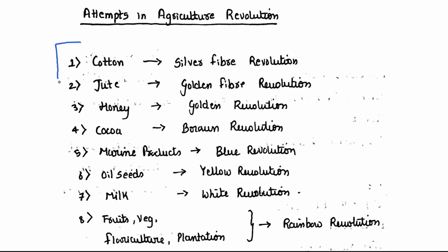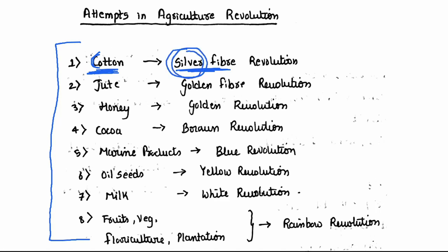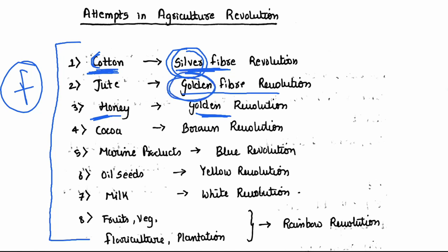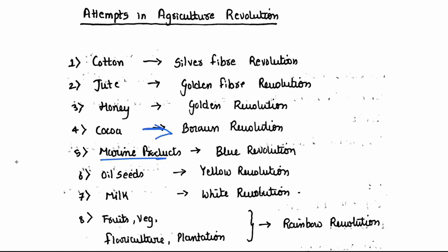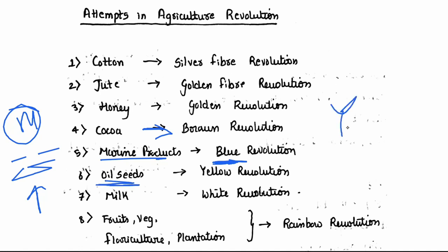Here are important agricultural revolutions: Cotton — Silver Fiber Revolution (cotton is white, silver is almost white). Jute — Golden Fiber Revolution. Honey — Golden Revolution. Cocoa — Brown Revolution. Marine products — Blue Revolution (ocean is blue). Oil seeds — Yellow Revolution (oil is yellowish). Milk — White Revolution, also called Operation Flood.